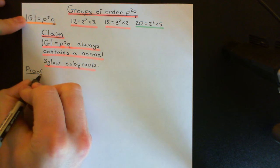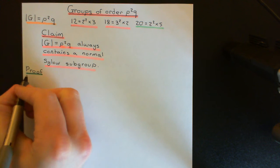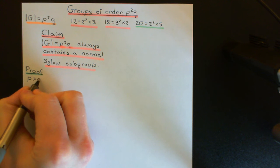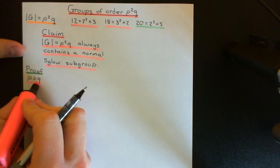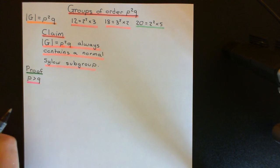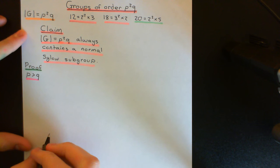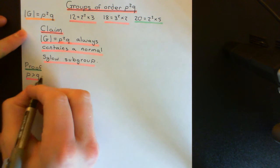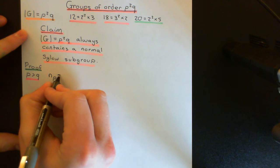How are we going to prove this? We're going to split the proof into two cases. Case one is where p is strictly greater than q, and case two is where q is bigger than p. Note that p and q must be different primes — we're not talking about groups of order p cubed. Therefore, either p is greater than q or q is greater than p. In case one, p is strictly greater than q, and I claim that we will only have one Sylow-p subgroup.